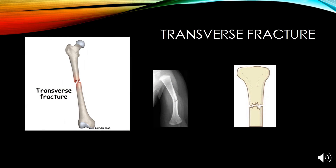A transverse fracture is a break to the bone that happens across the longitudinal axis of the bone. Transverse fractures occur on long bones such as the femur or fibula.